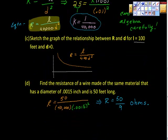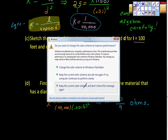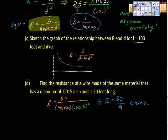Moving on. It says sketch the graph of the relation between R and D for L is 100 feet and the diameter is greater than zero, which makes perfect sense. And if you look at this, we know how this works. We've worked on these types of equations before. We have, we actually have L is 100, so it should be 100 up here.